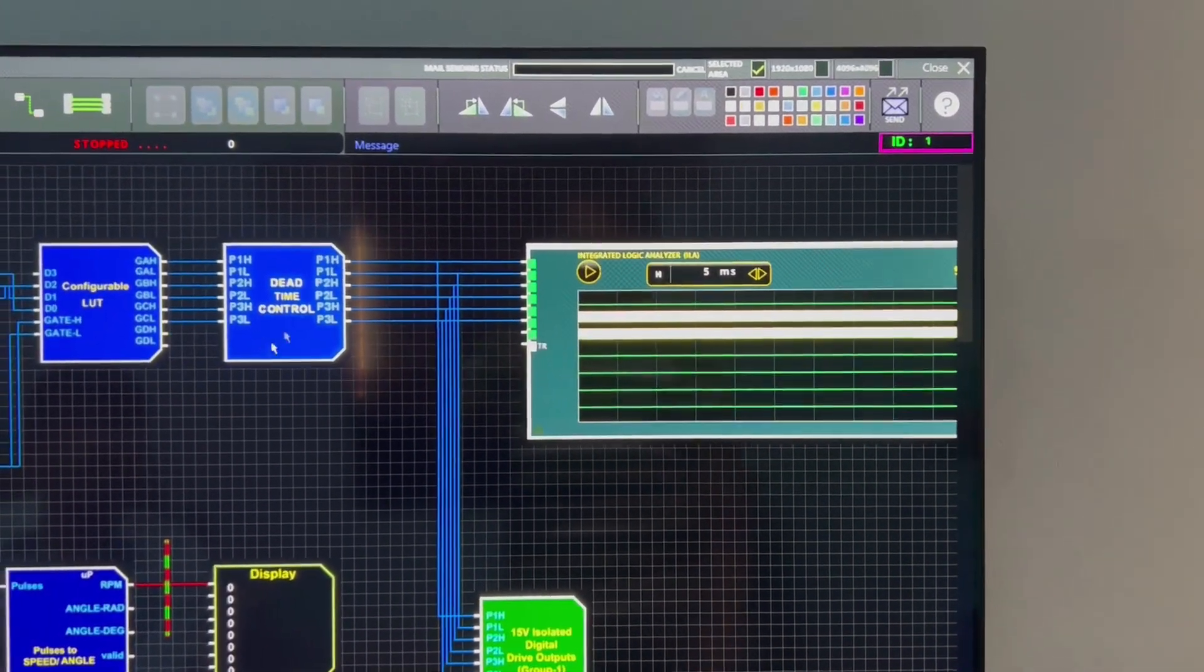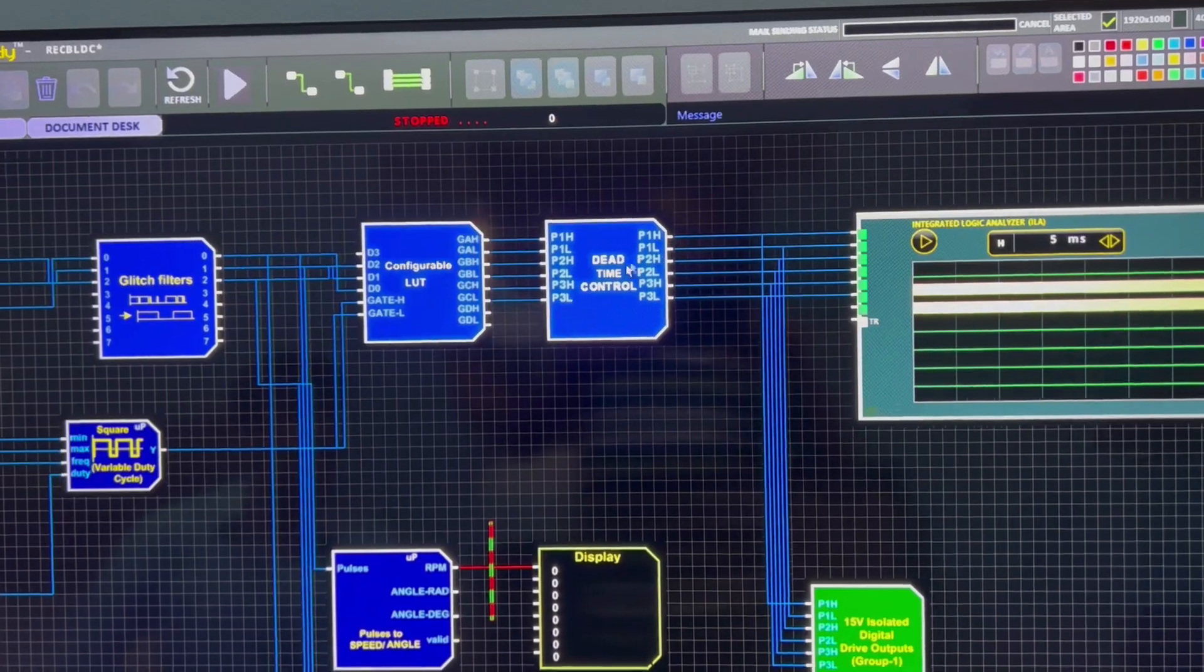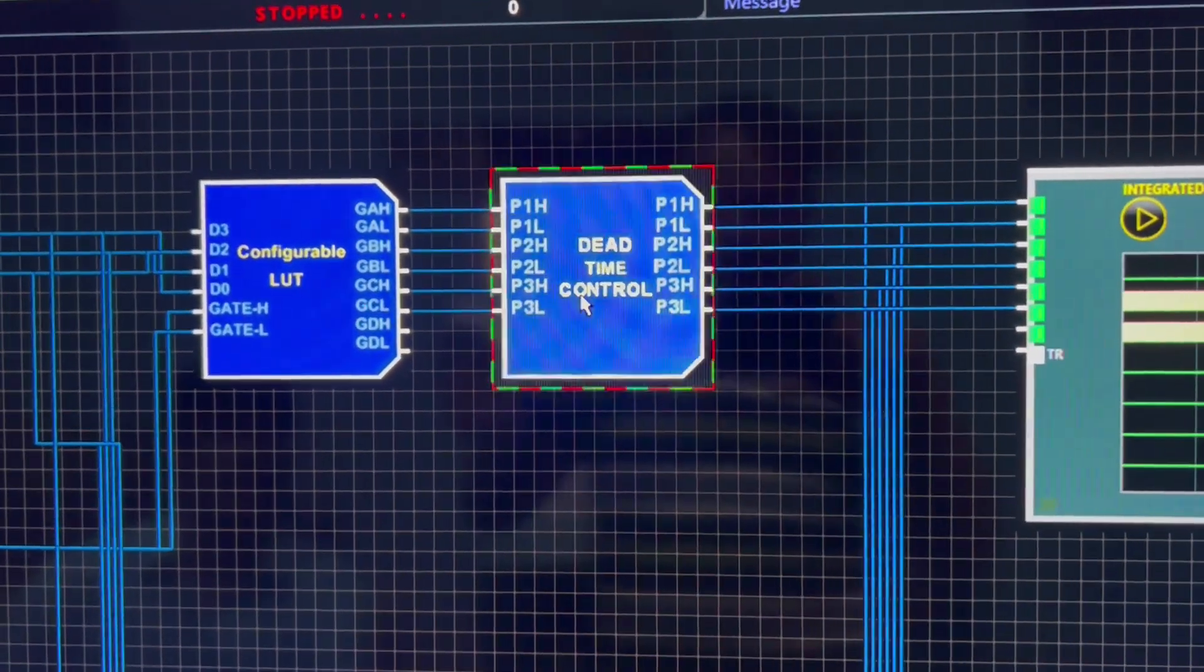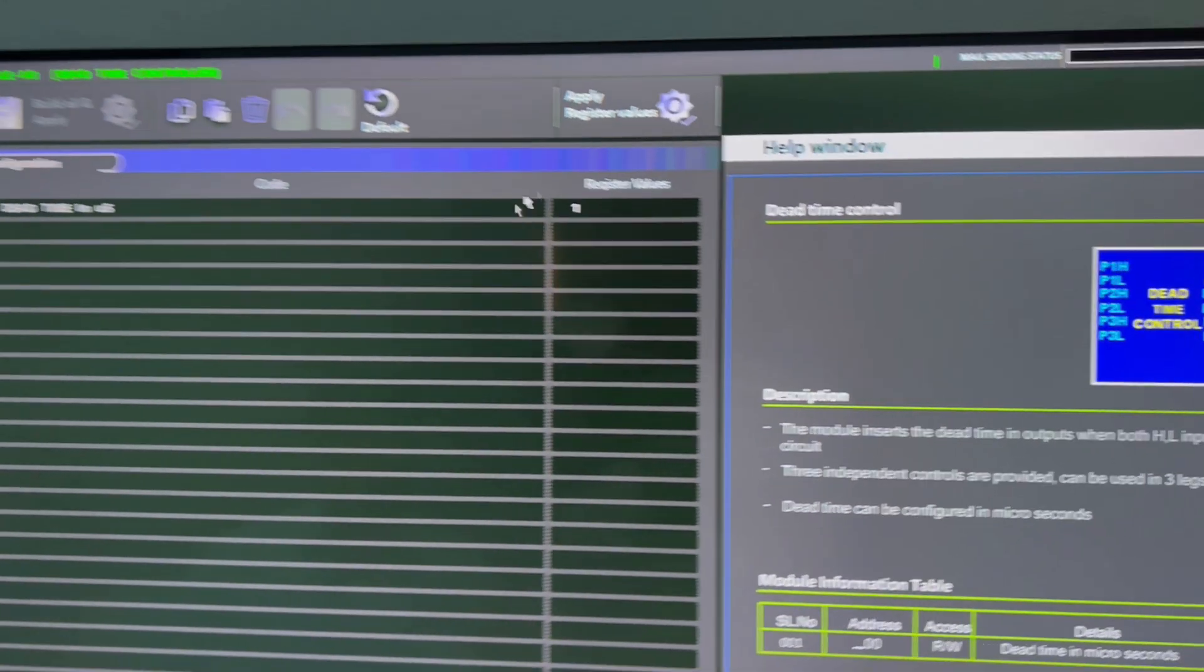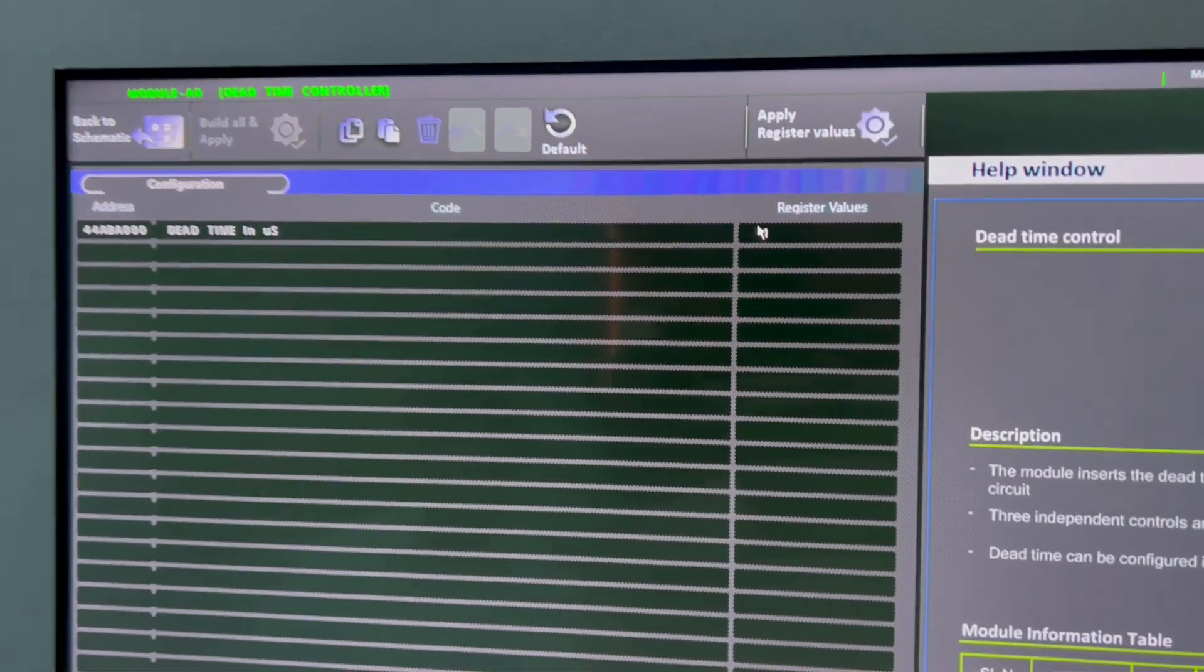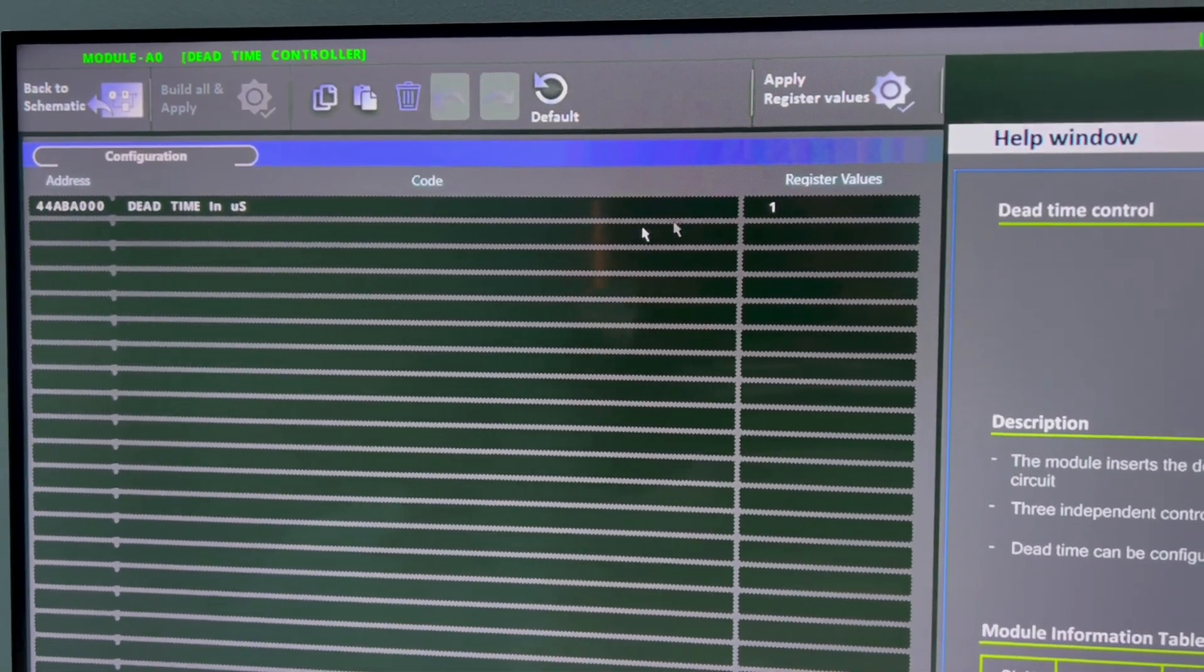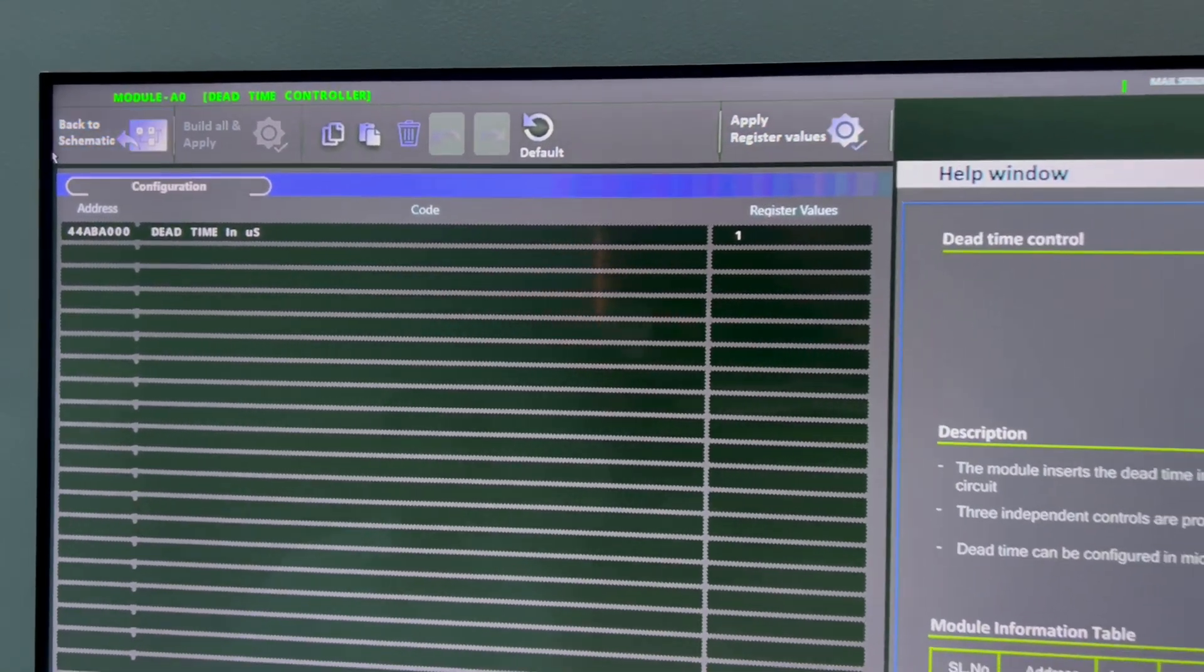Here we are using a dead time controller. For each leg we need a dead time, and we need to configure the dead time value in microseconds. Here I am configured one. Let's apply this back to schematic.